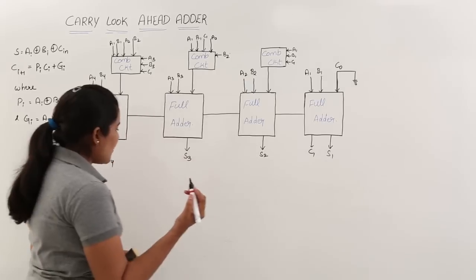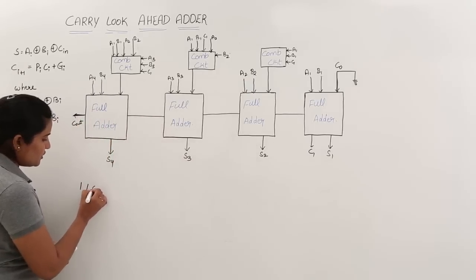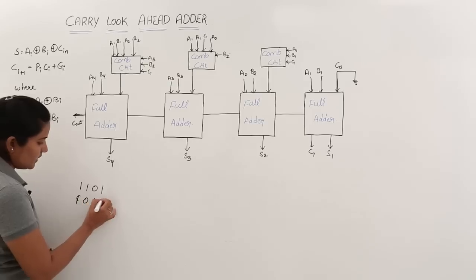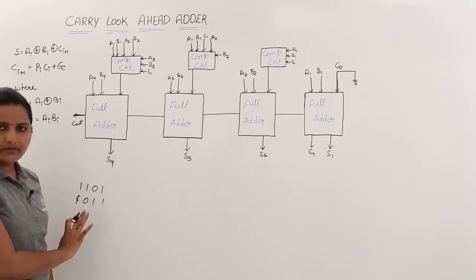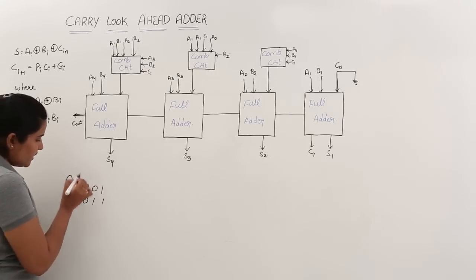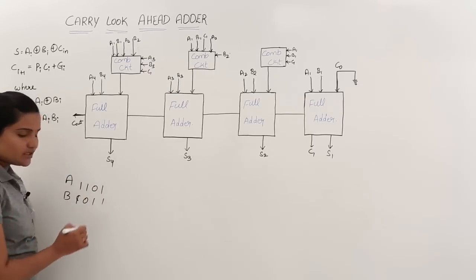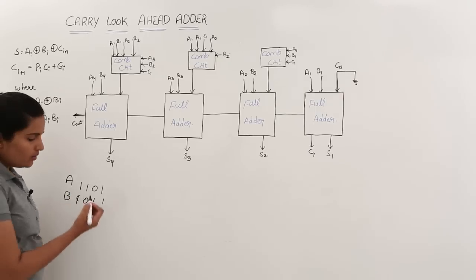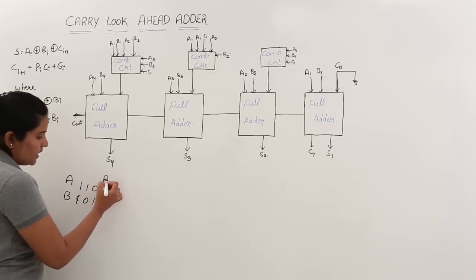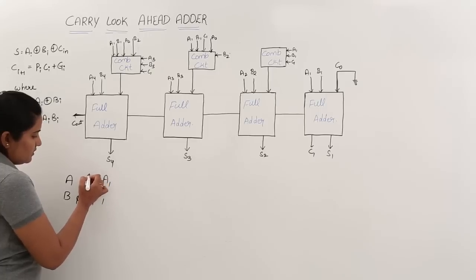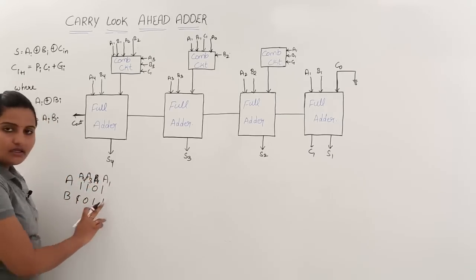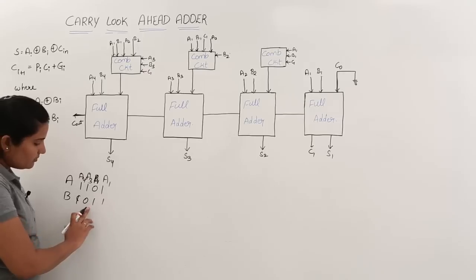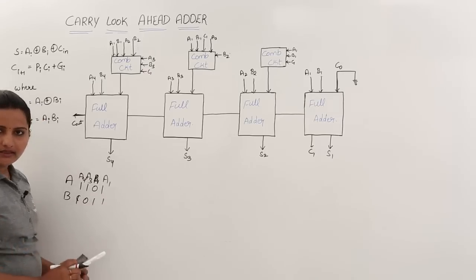I am going to add 1101 with 1011. These are the two 4-bit numbers I am going to add. This is considered as A and this as B. Now this bit is A1 B1, and I am considering A1, A2, A3, A4 and similarly B1, B2, B3, B4.